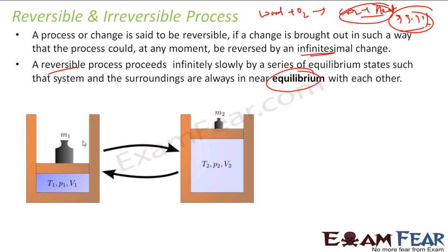Consider this setup: if you put more mass on a piston, it will compress; if you put less mass, it will expand. For this to be a reversible process, the system must always be in equilibrium. To move from one state to another, you add or remove mass in very small increments — say, one gram at a time — and at every step the system is in equilibrium.